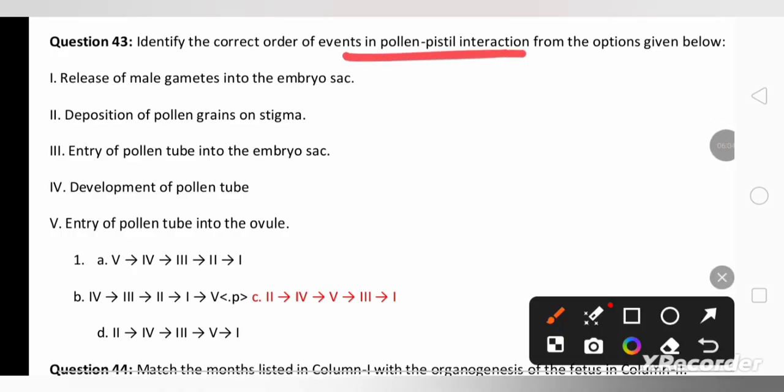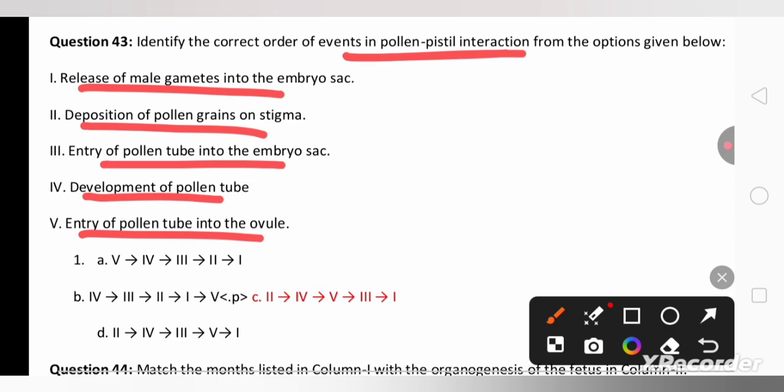Identify the correct order of the event in pollen-pistil interaction from the options given below. So in pollen-pistil interaction first will be deposition of the pollen grains on the stigma, next will be development of pollen tube, next the entry of pollen tube into the ovule, then entry of pollen tube into the embryo sac, then finally the release of male gametes into the embryo sac for the double fertilization.